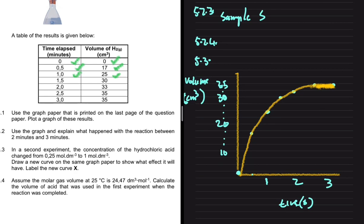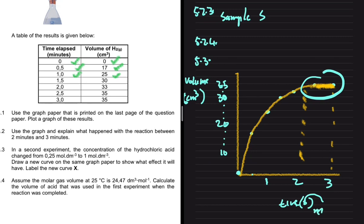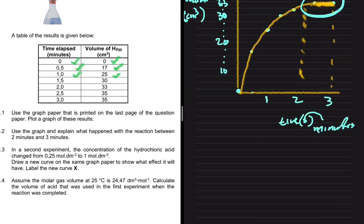For 5.3.2, we look at what happened between two minutes and three minutes. Between t = 2 and t = 3 minutes, the line flattens out — the gradient goes to zero. This means the reaction is complete and is no longer taking place. Note that on the x-axis the unit is minutes, not seconds.